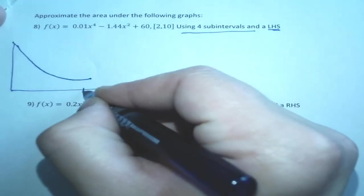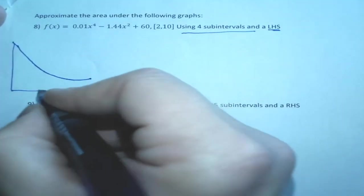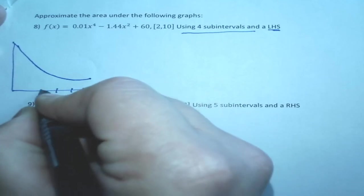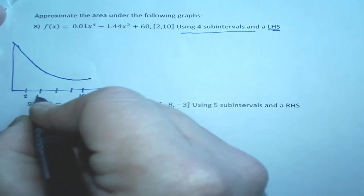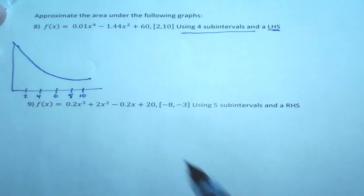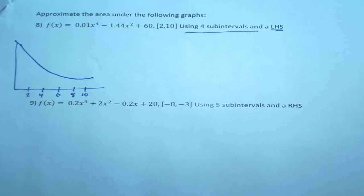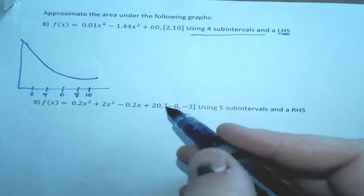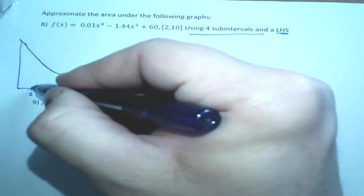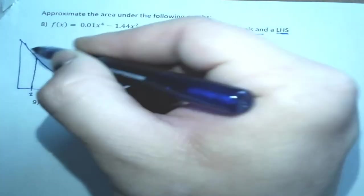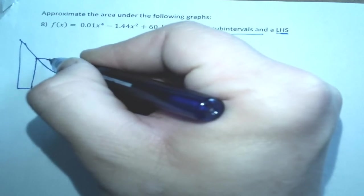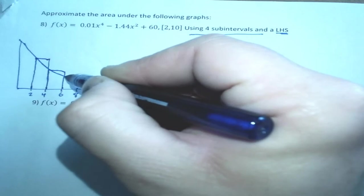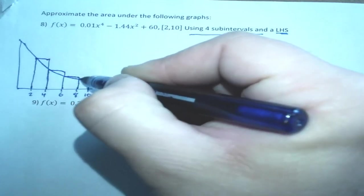And we're going to say that's 10, so we're going to say 8, 6, 4, and 2. So 2, 4, 6, 8, and 10. And they want a left-hand, and we're going to start at 2 and use a left-handed subinterval. So that means the left-hand side is going to hit the curve.